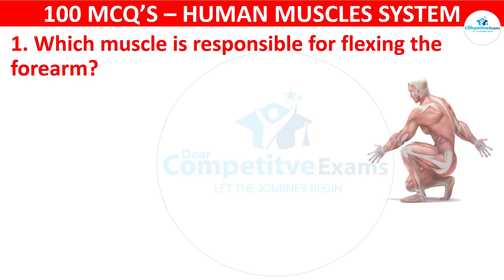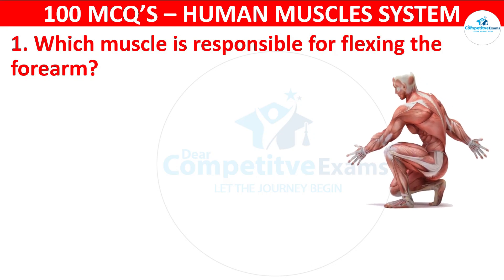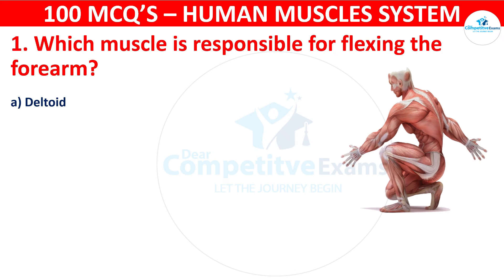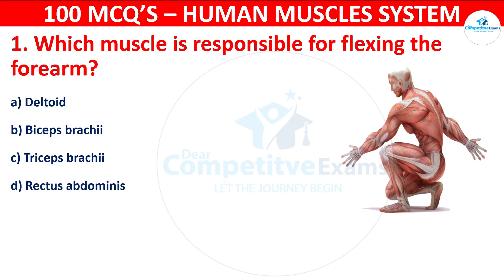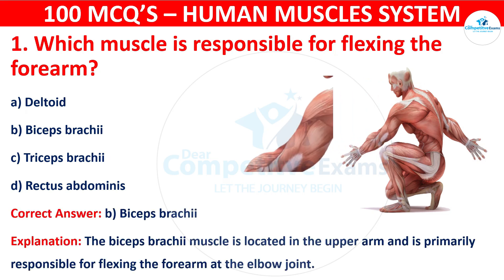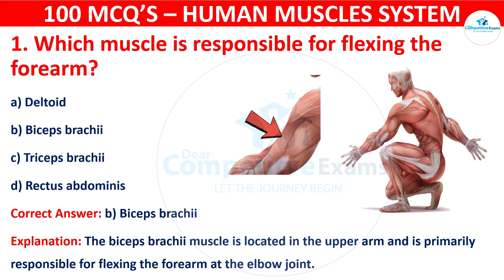Which muscle is responsible for flexing the forearm? Your options are: Deltoid, Biceps brachii, Triceps brachii, or Rectus abdominis. The correct answer is B, that is biceps brachii. The biceps brachii muscle is located in the upper arm and is primarily responsible for flexing the forearm at the elbow joint.